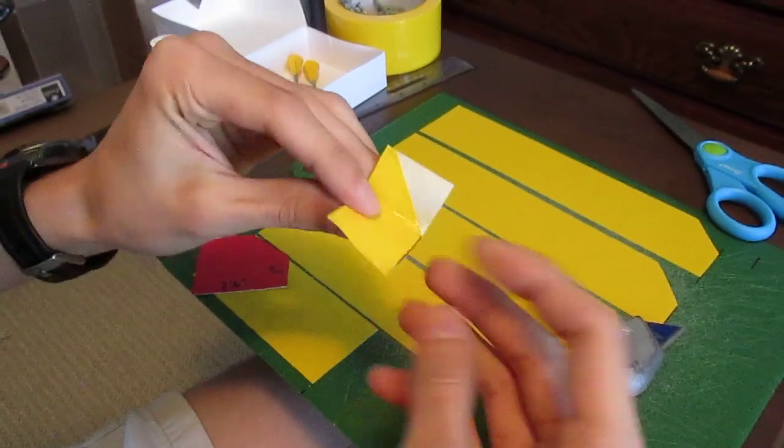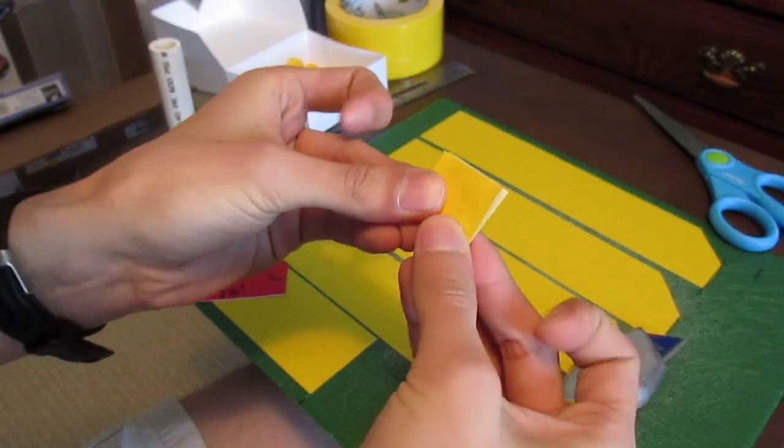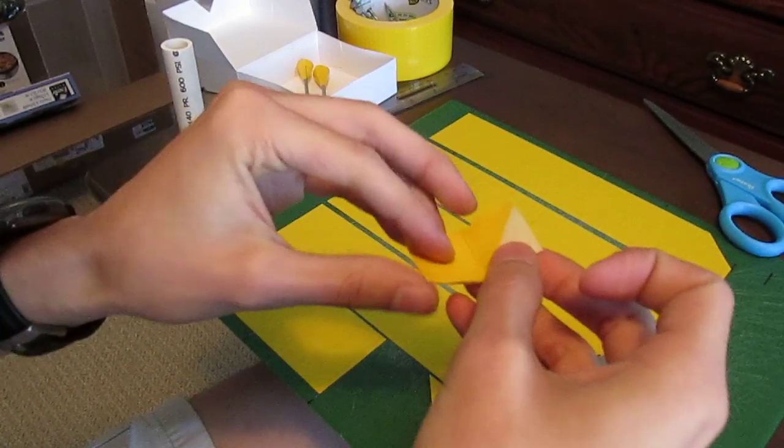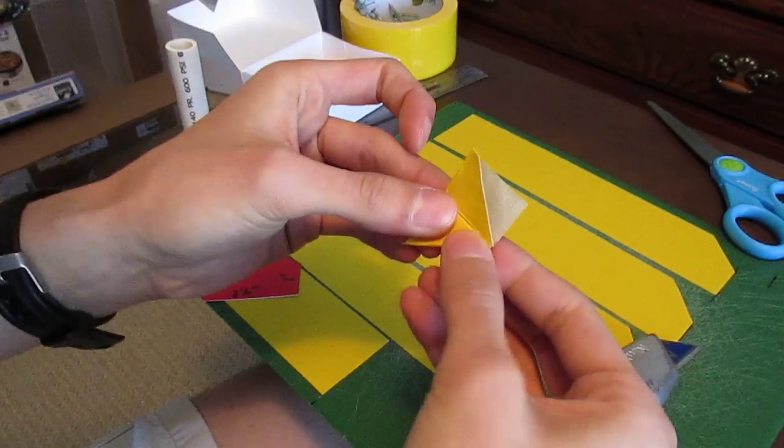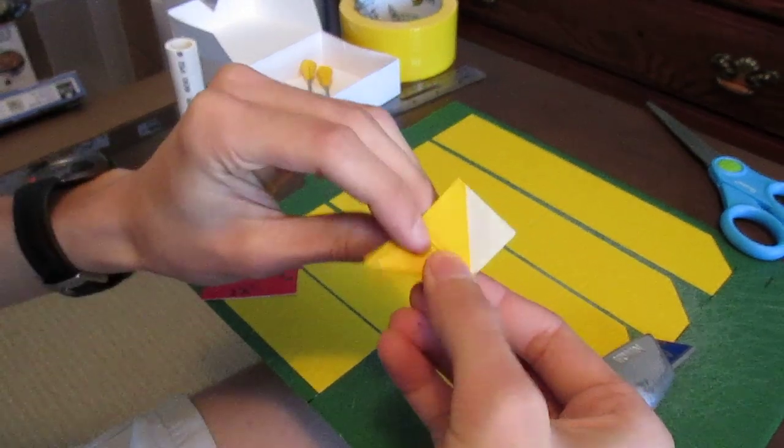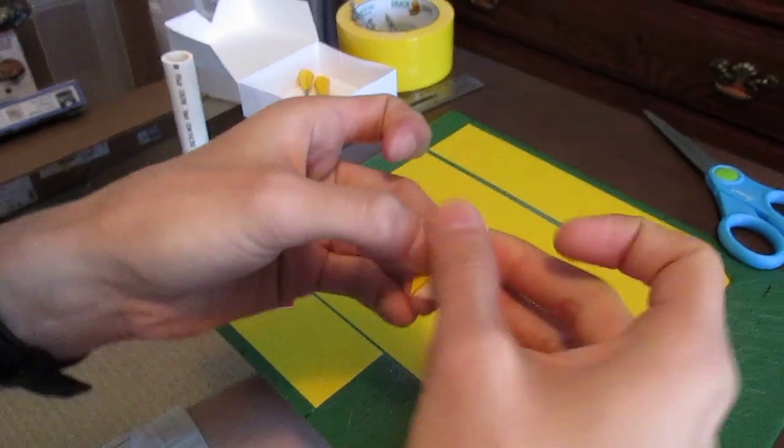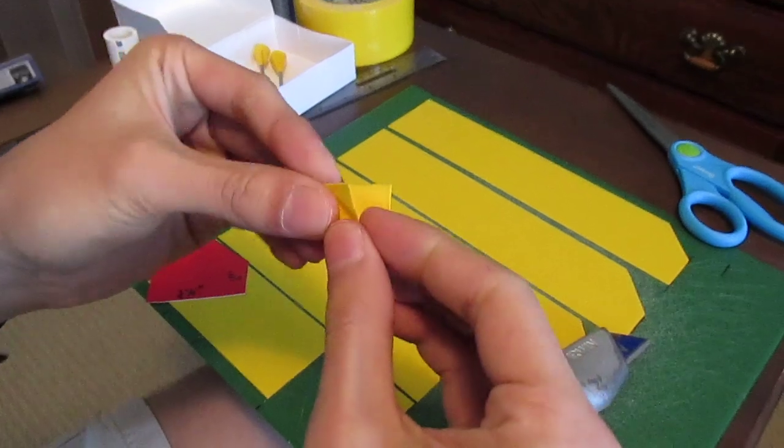Once that's done, you fold this one in half for a crease. Then you fold up to that fold, fold it in half again, and now this little tab can be closed over.